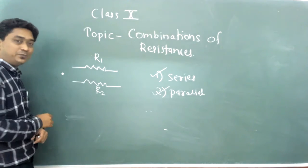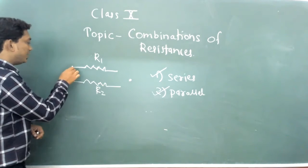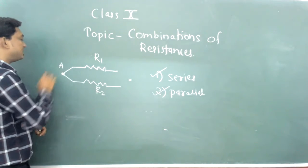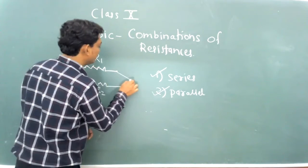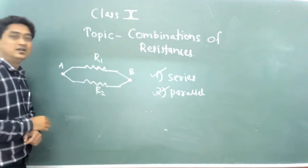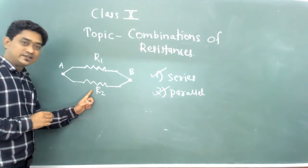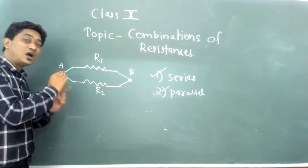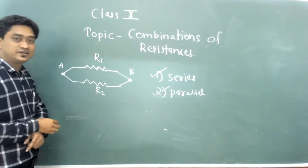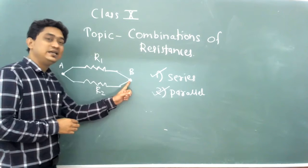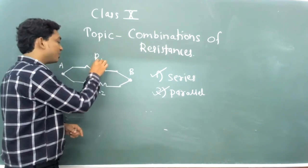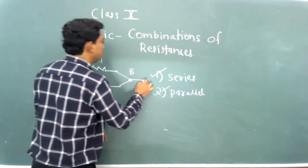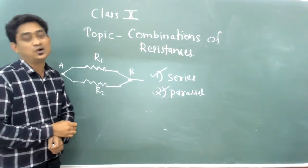Here we have two resistances, R1 and R2, parallel to each other. Suppose here is one point A and here is another point B. R1 and R2 are connected at a common starting point A and a common ending point B. So such a type of combination is called a parallel combination.